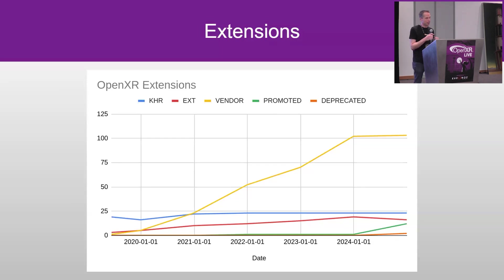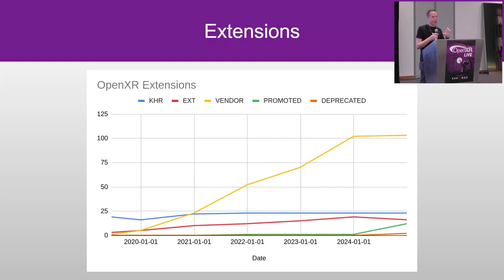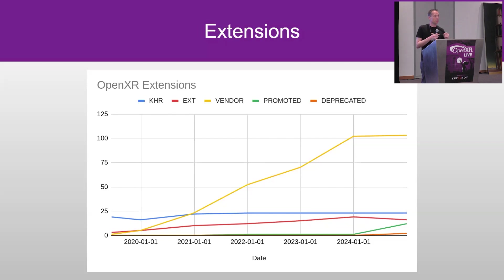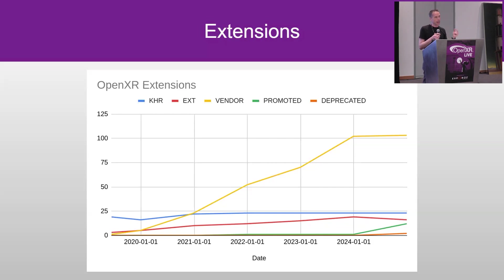To express that in a graph: the yellow line shows all the vendor extensions released since the inception of the standard. It's necessary because all of us have been experimenting with new features. But now, as an industry, we need to come together. We want that vendor extension line to come down and the core extension lines — which have been suspiciously horizontal — to go up. That is now a big focus of ours. The first kink you see in the graph is OpenXR 1.1, where we start getting rid of some vendor extensions and gathering them into the core.